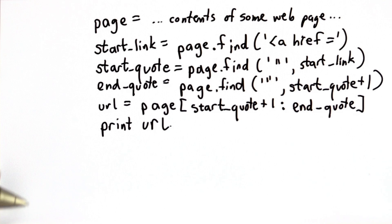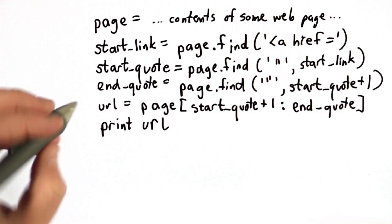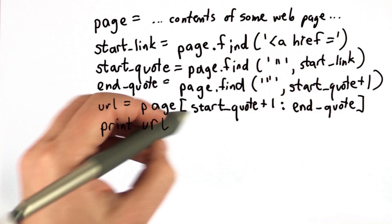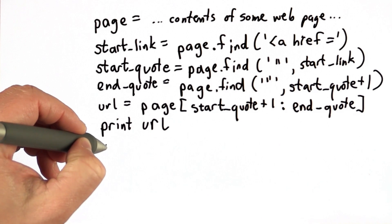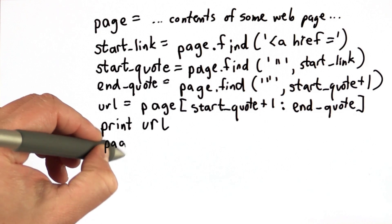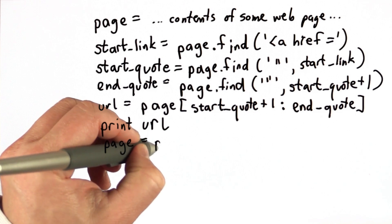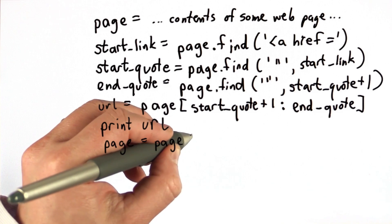If we wanted to find the second one, well, we could do it all again. We could say, well, now we want to advance, so we're only looking at the rest of the page. So we could do that by updating the variable page, assigning to it the result of the rest of the page, starting from end quote.